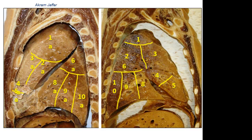Similar segments are present on the left side, but in the upper lobe on the left side we have collective segments from the upper and middle lobes: apical, anterior, and posterior. The part of the upper lobe on the left side that represents the middle lobe on the right side is called the lingula, and it has superior and inferior lingula segments — while in the corresponding middle lobe on the right lung, the segments are medial and lateral.